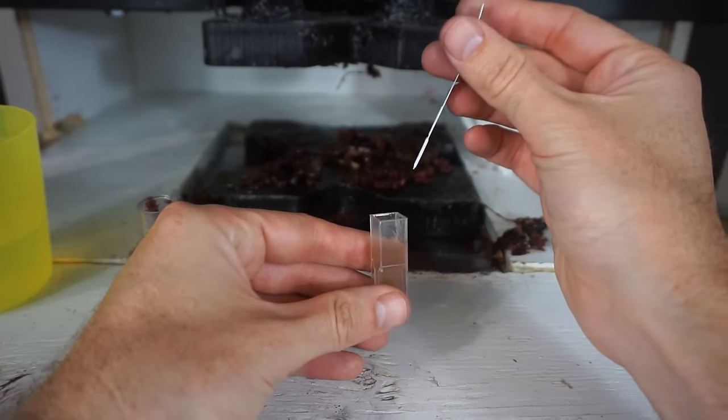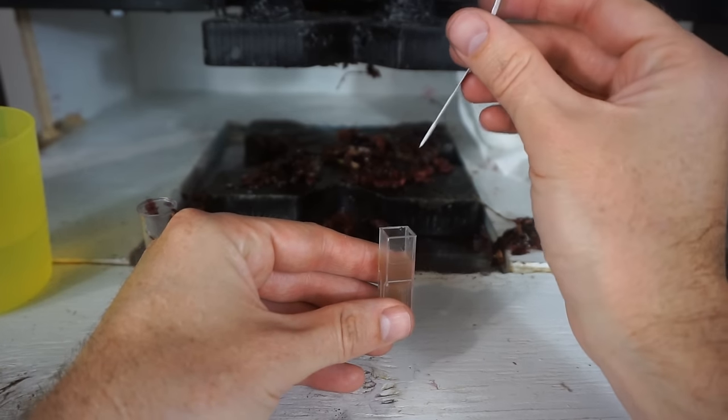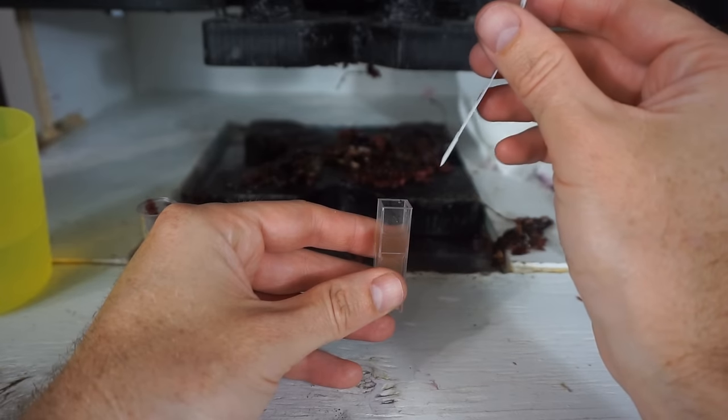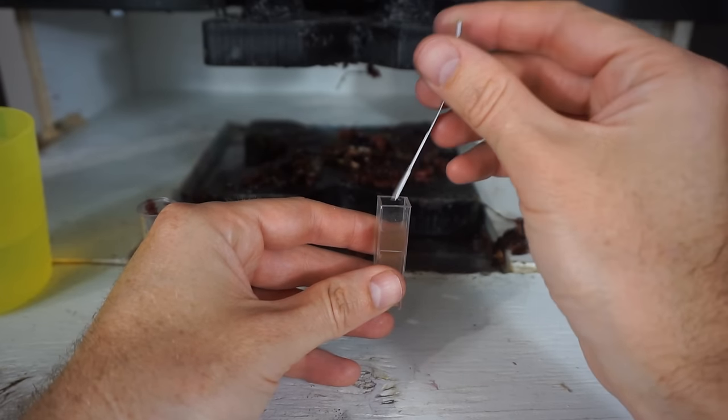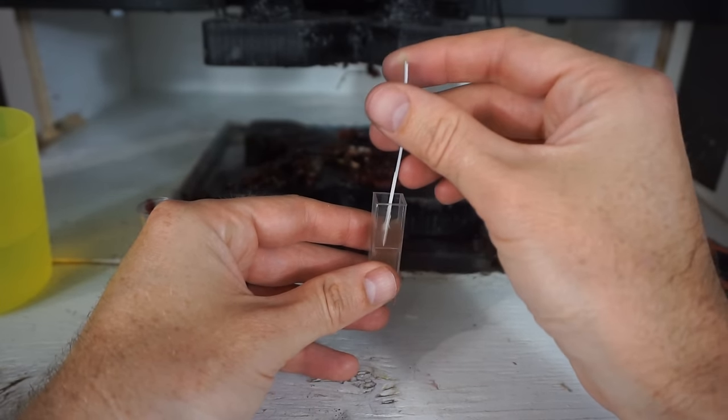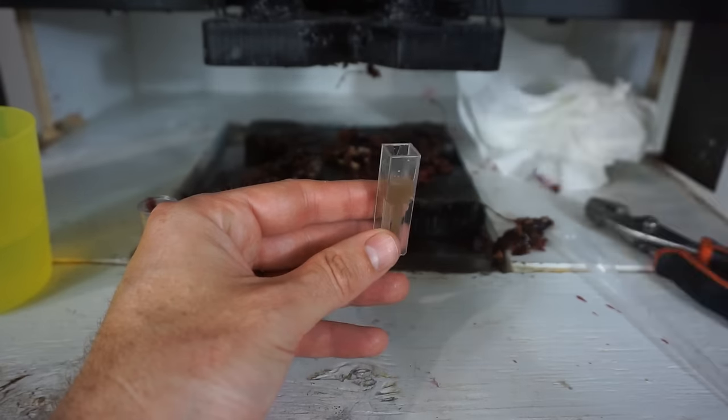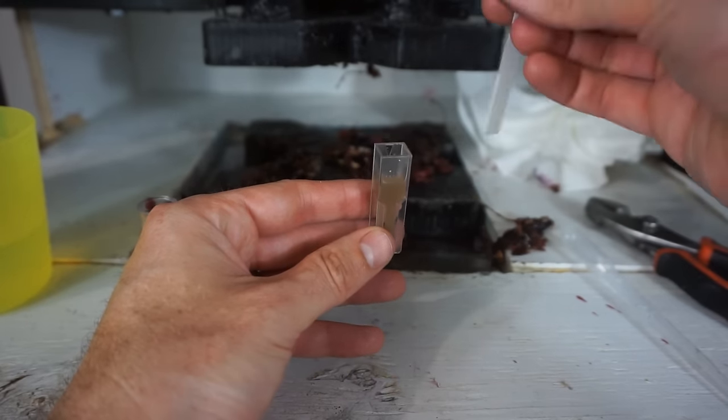Strip number one will turn any cyanide that's in there into cyanogen chloride. And then the next strip I dip in will turn that into a blue color. I have to do this for 30 seconds. Now if there's any cyanide this strip should turn blue.